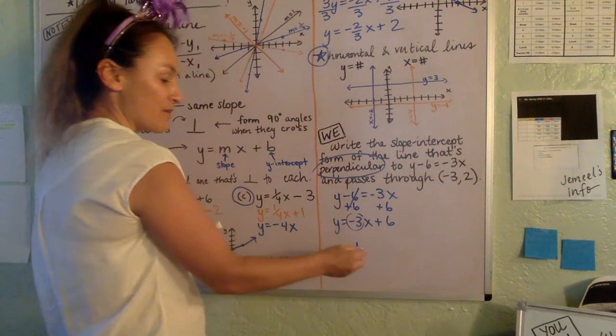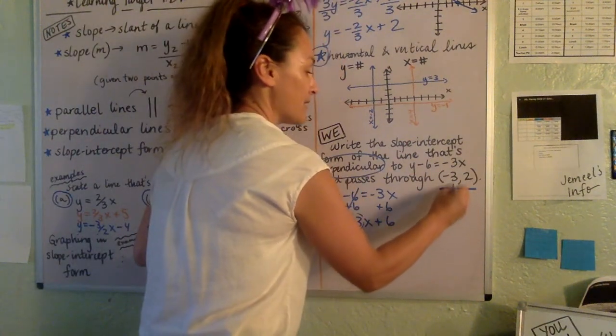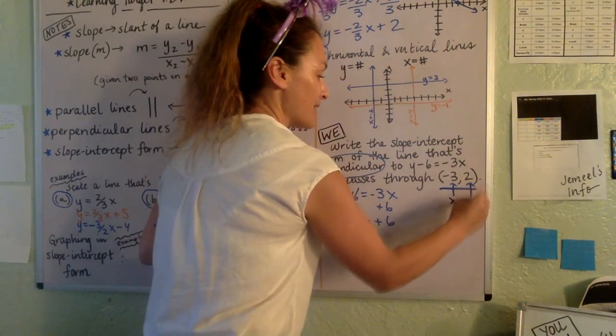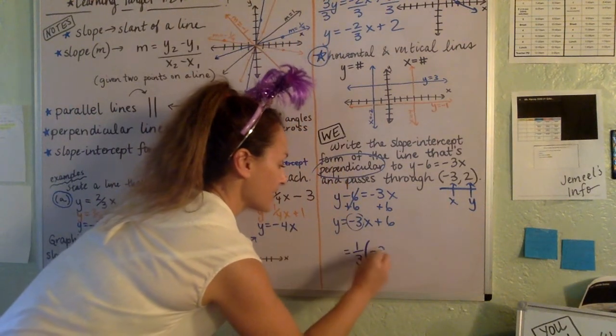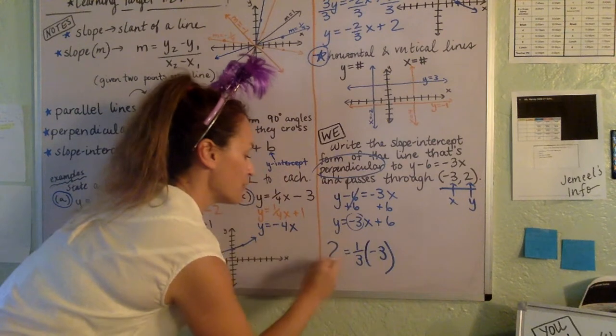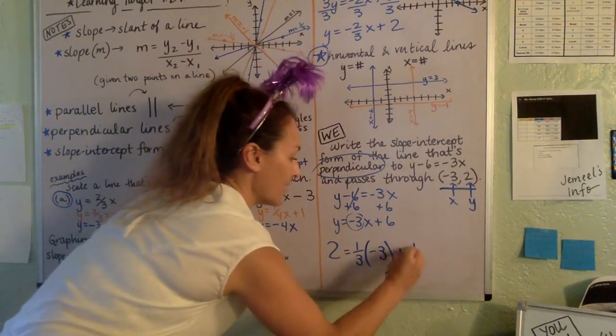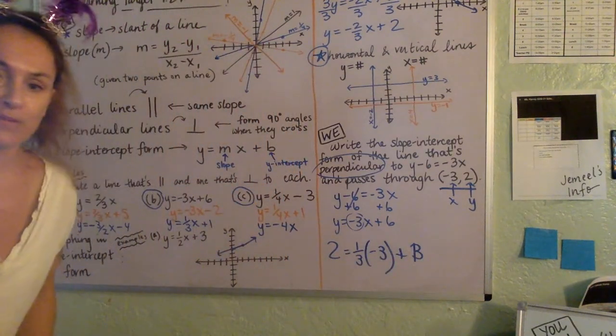Further, we want our line that we're going to write for our final answer to pass through this point. Well, this is an X and this is a Y. So let's sub in negative 3 for X. Let's sub in 2 for Y. And then let's go ahead and solve for the B.